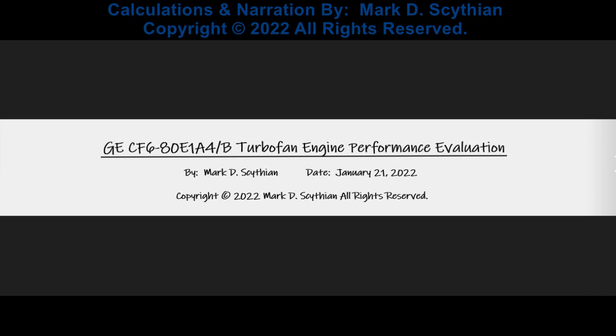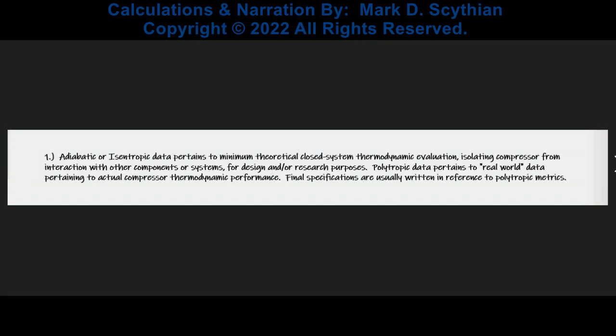We can start with the performance evaluation. Feel free to pause each slide when need be, because the final data will be specified based on the calculated proofs. First, we have to differentiate isentropic and polytropic data. The simplified definitions: isentropic data pertains to the minimum theoretical values as if the compressor was isolated from the rest of the components, whereas the polytropic data is the real-world data — what you would get if you experimentally measured the temperature and pressure changes in integrative reaction with all other engine components. So the polytropic data is the real-world actual specifications, as opposed to the theoretical isentropic thermodynamic metrics.